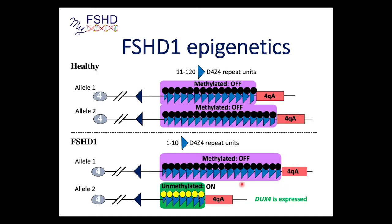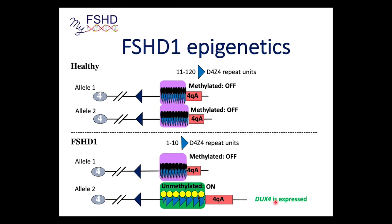So you get compaction of one chromosome — the non-contracted one is really off — and the contracted one is still on. The DUX4 gene on the methylated chromosome can't be expressed, but the DUX4 gene on the contracted chromosome is able to be expressed in your skeletal muscles, and that's how you get FSHD1.